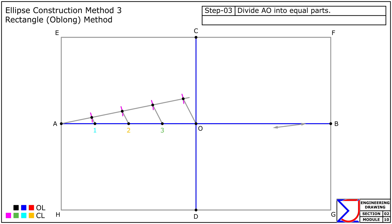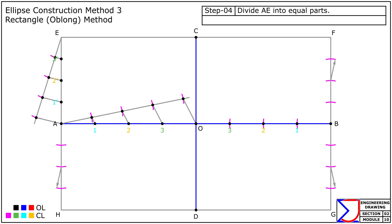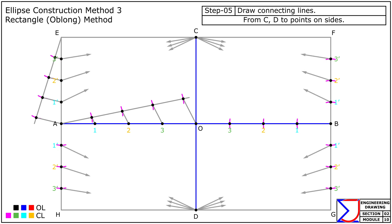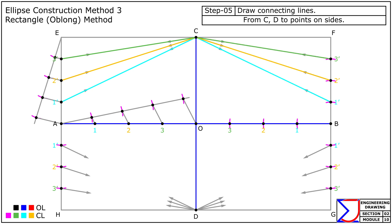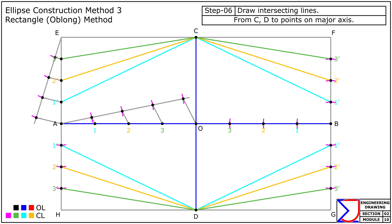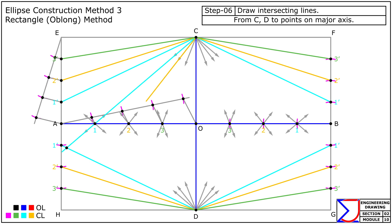Then, using the same division length, mark corresponding points along OB and along the sides of the rectangle AH, BF, and BG. After that, from points C and D draw connecting lines to the marked points along the sides of the rectangle.